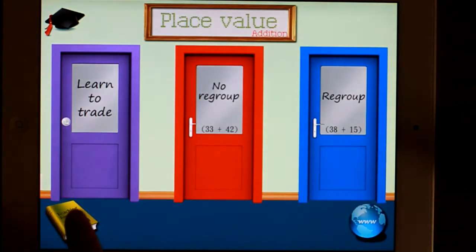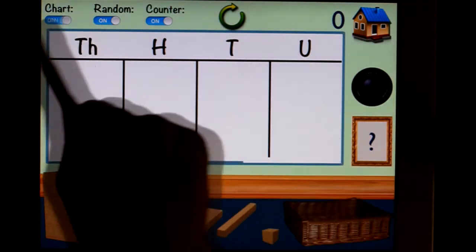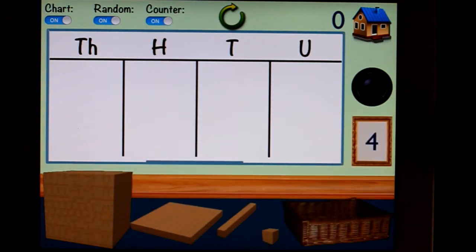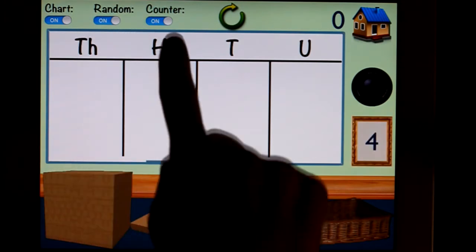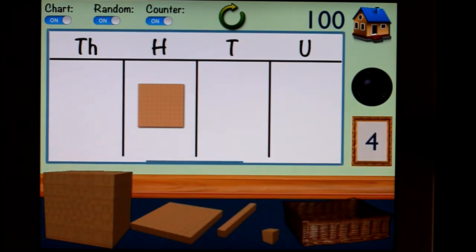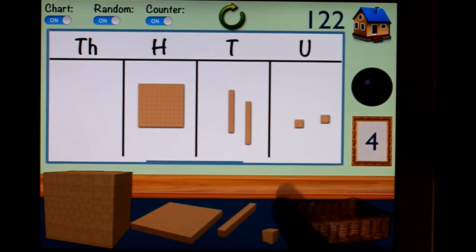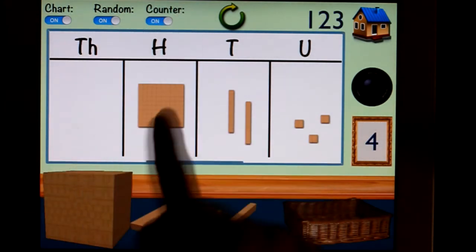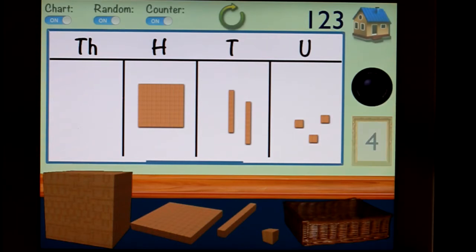Let's have a quick look at the teaching tool. I've got a chart with thousands, hundreds, tens, units - off, on. A random counter, which is this, for playing games. Off, on. And a counter which will bring the number up there, so one hundred and twenty-three. We can turn that off, on. Camera tool here sends a photo to the gallery which you can access later on.